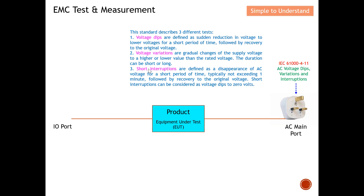Last is short interruption. Short interruptions are defined as a complete disappearance of AC voltage for a short period of time — typically not exceeding one minute — quickly followed by recovery to the original voltage. A short interruption can be considered as a voltage dip to zero volts. Again, I want to confirm the DUT can still function.